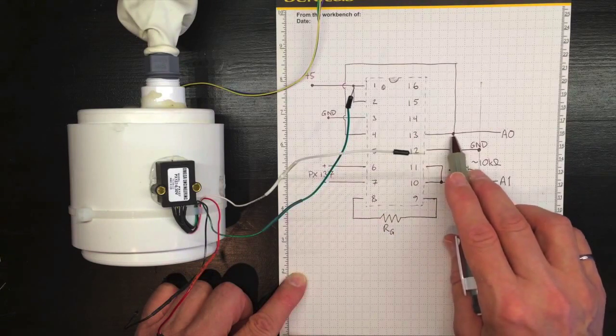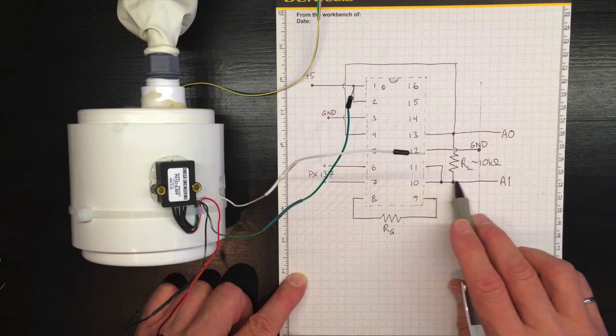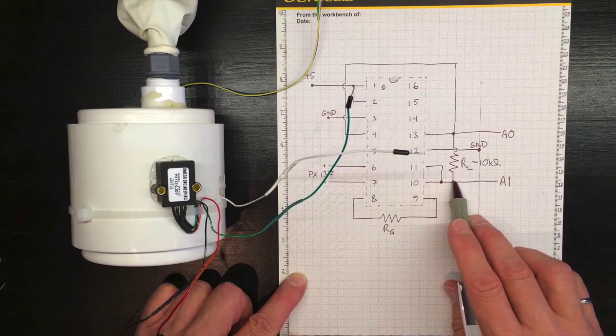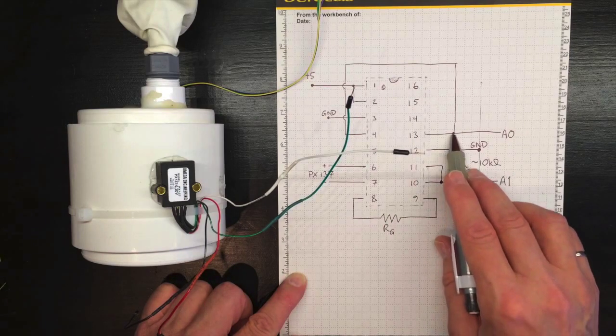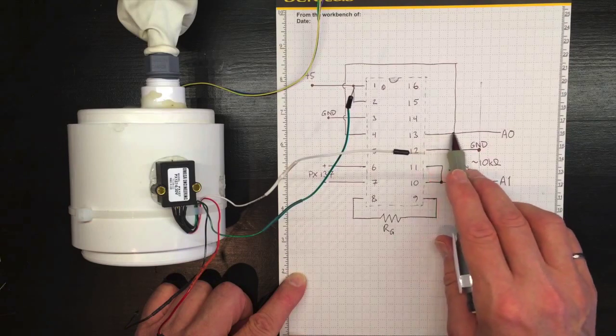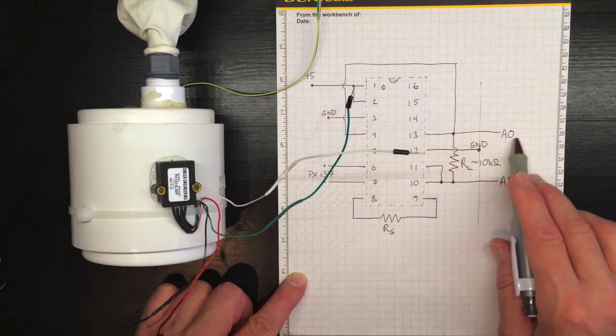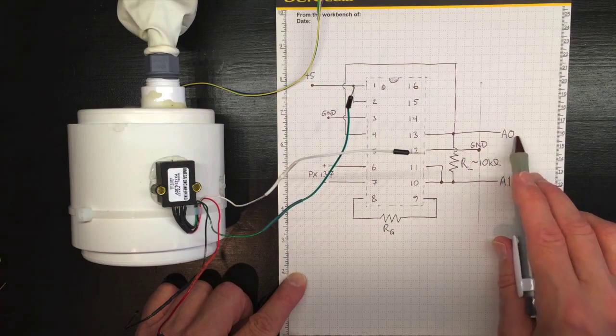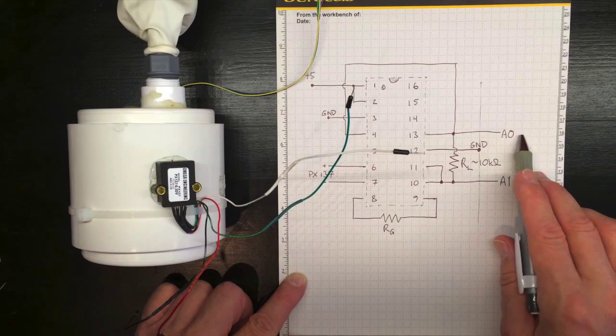We need a load resistor here to allow some current to flow from the output so that we don't have noise problems. And we'll connect that to our pseudo ground up here. We're also going to connect the pseudo ground, just like last time, to pin A0 on the Arduino so we can monitor what it actually is.